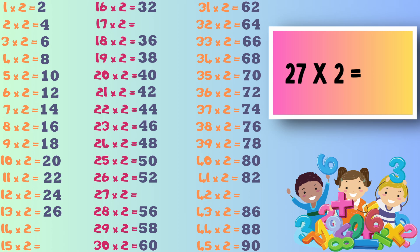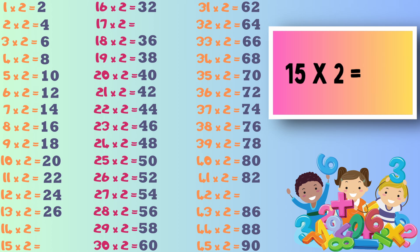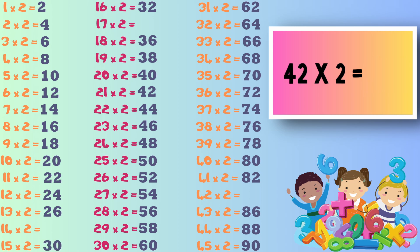Now we have 27 times 2 and the answer to this sum is 54. Next up it's 15 times 2 and the answer is 30. Next up it's 42 times 2 and the answer to this one is 84.